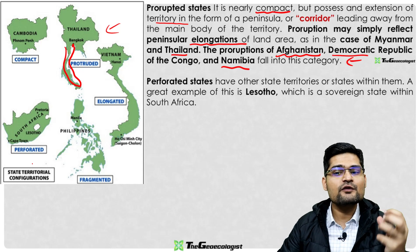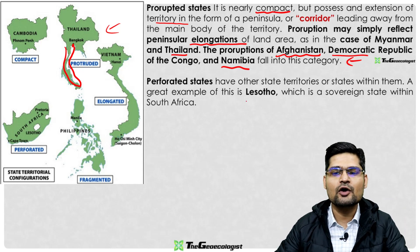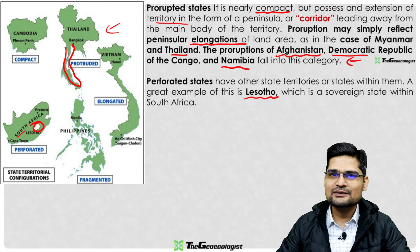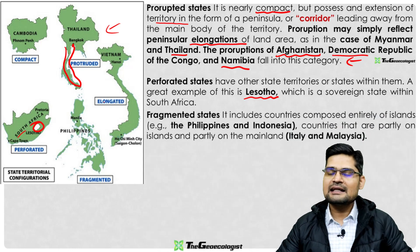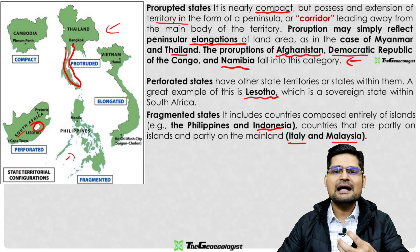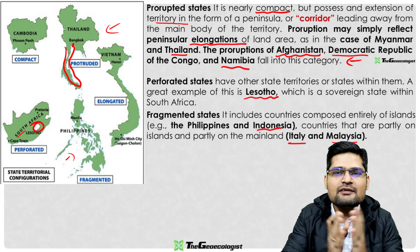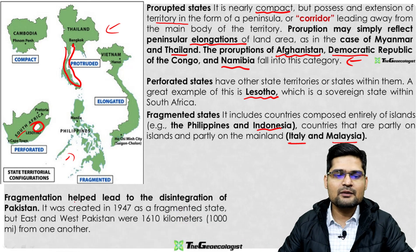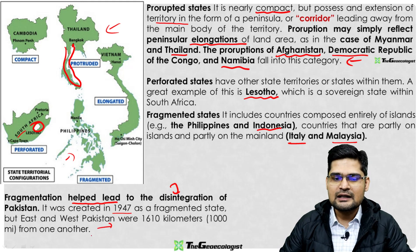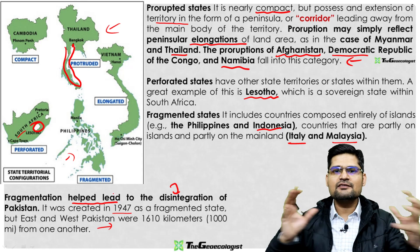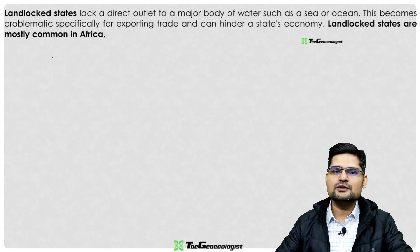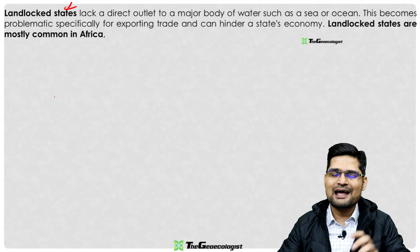A perforated state contains a state within a state — an enclave. Lesotho is a sovereign state within South Africa's territory. Fragmented states like the Philippines, Indonesia, Italy, and Malaysia consist of many islands. Fragmentation also contributed to the disintegration of Pakistan, as East and West Pakistan were a fragmented state until East Pakistan was declared Bangladesh in 1971.